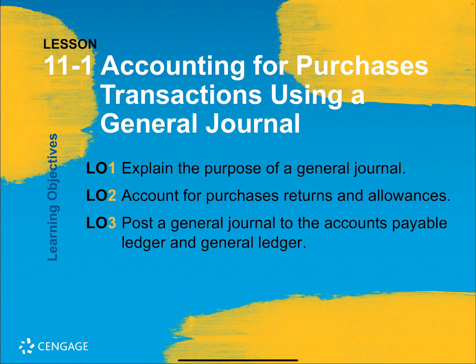Lesson 11-1 is accounting for purchases transactions using a general journal. The learning objectives are to explain the purpose of the general journal, look at the account for purchases return allowance, and post a general journal to the accounts payable ledger and to the general ledger.